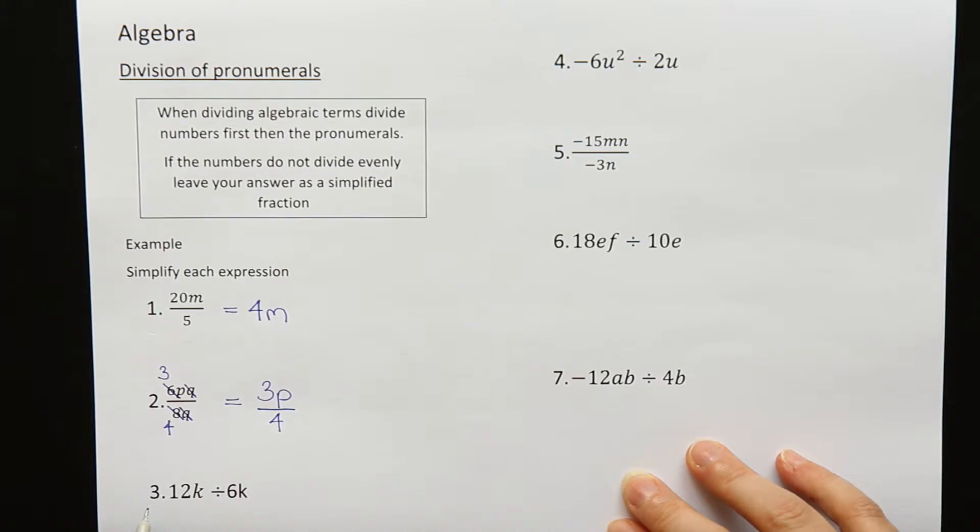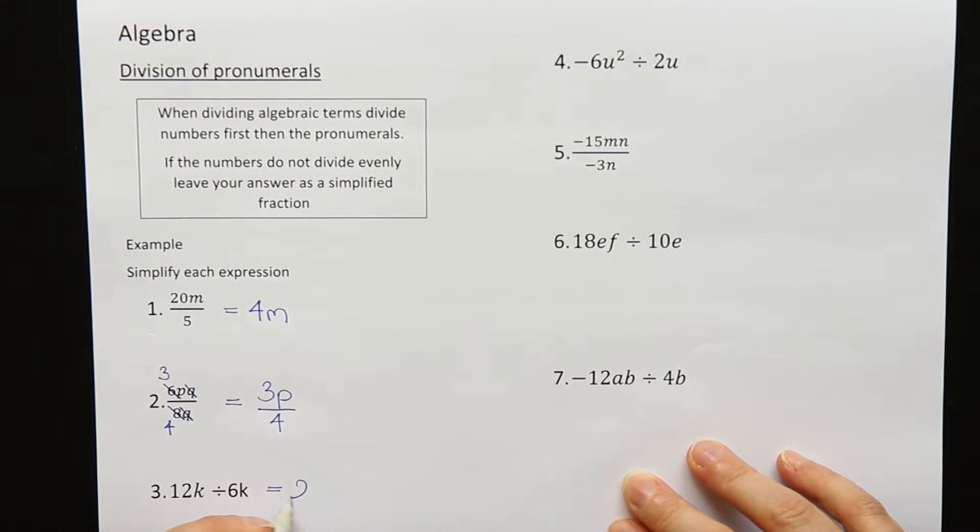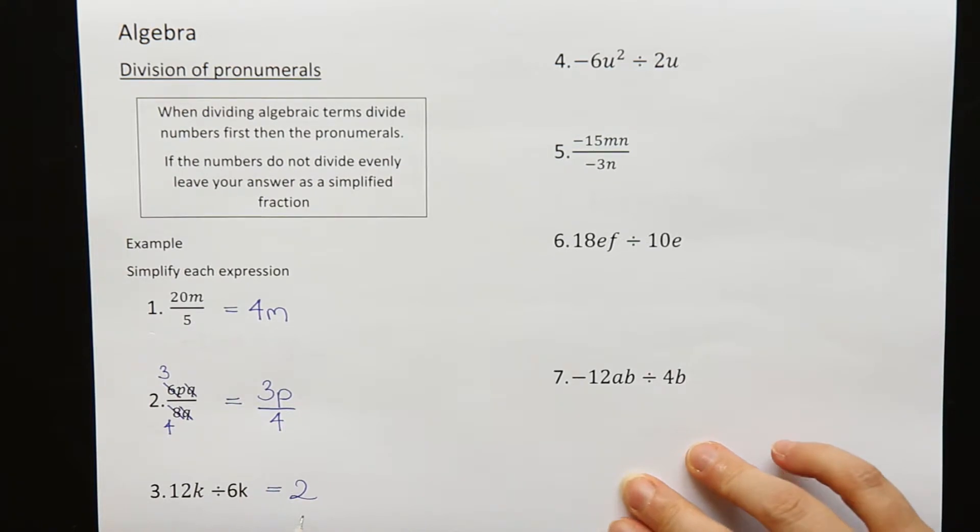Question three. 12k divided by 6k. Can I divide the numbers? 12 divided by 6? Yes, I can. That makes 2. K divided by k. When you divide letters, if they're the same, they cancel out. So the k's cancel out, and my answer is just 2. That's all that's left.